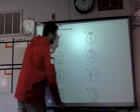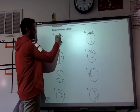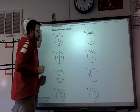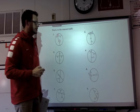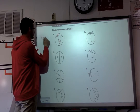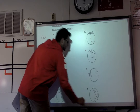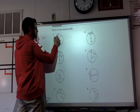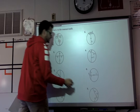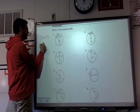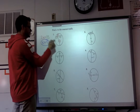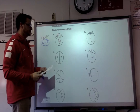Find X to the nearest tenth. We multiply the two segments that each chord is divided into. In this case, 2 times X gives us 2X, and it's going to be equal to 3 times 6, which is 18. We divide both sides by 2, and we find that X is equal to 9.